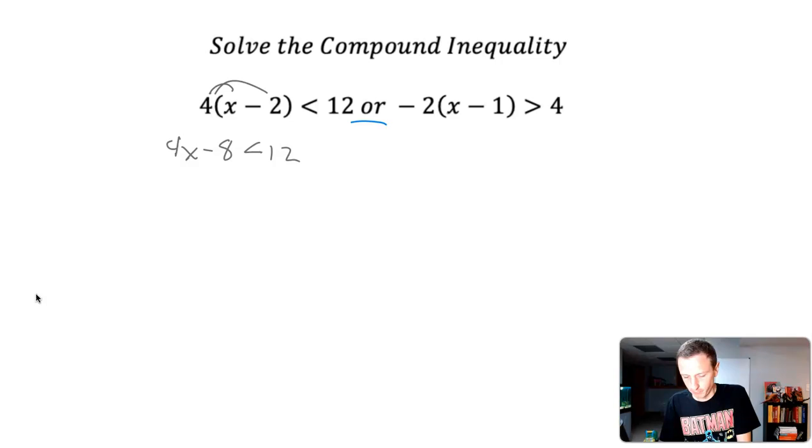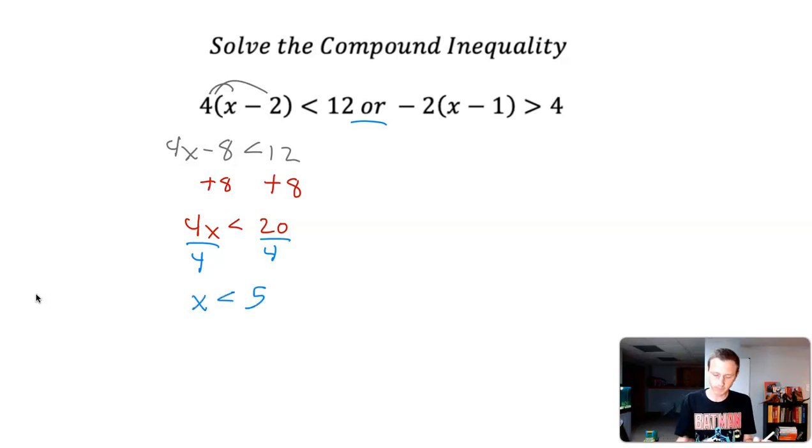Then from here we want to add 8 to both sides. So we get 4x is less than 20, right? 12 plus 8 is 20. And then we just divide by 4. So we get x is less than 5. Let's hold off right now and then we'll go to the second one and then we'll regroup from there.